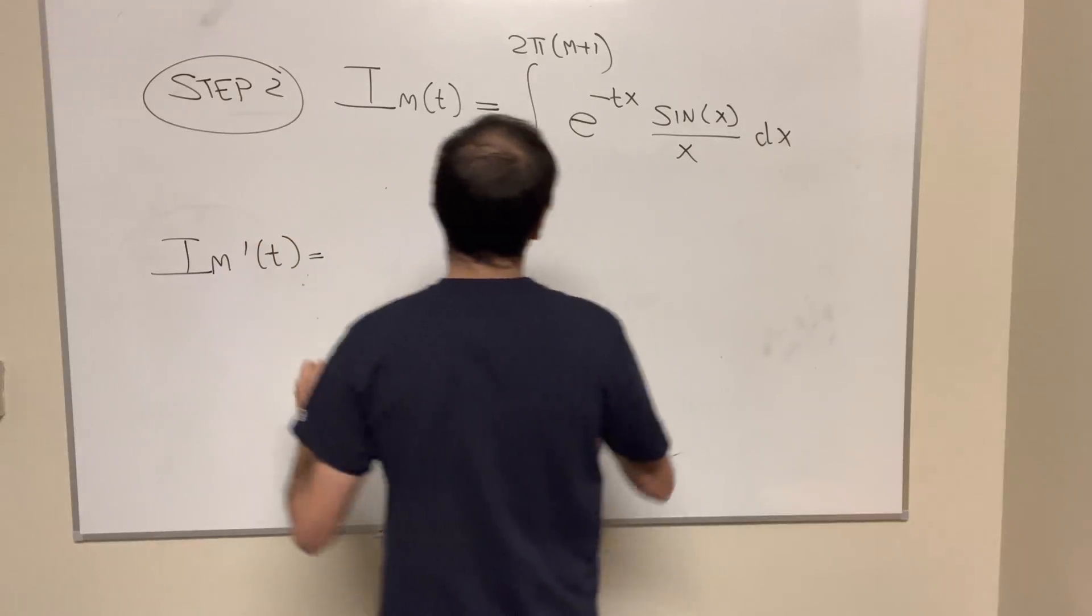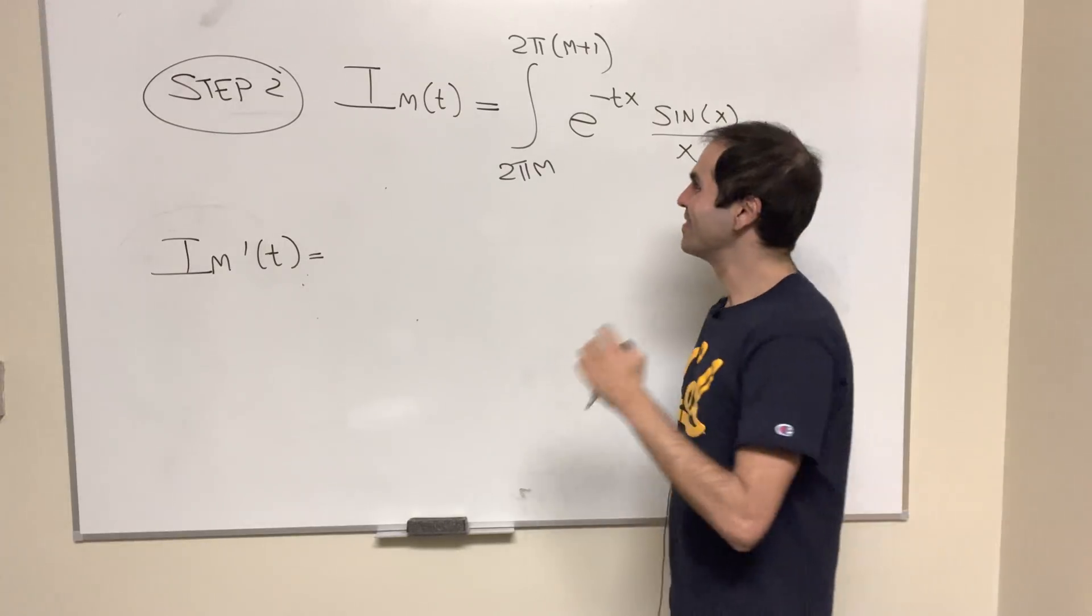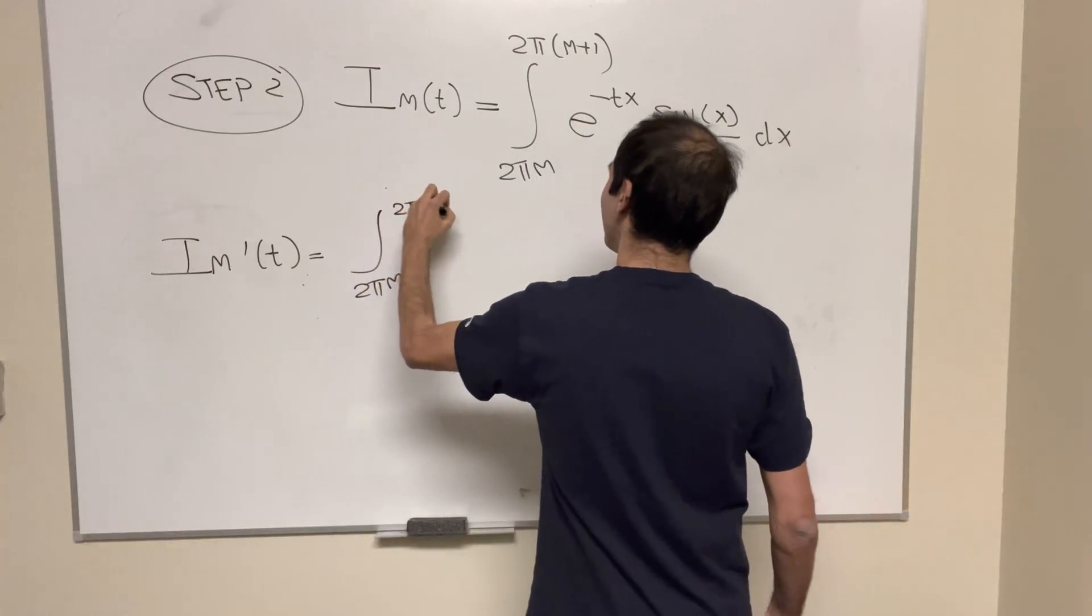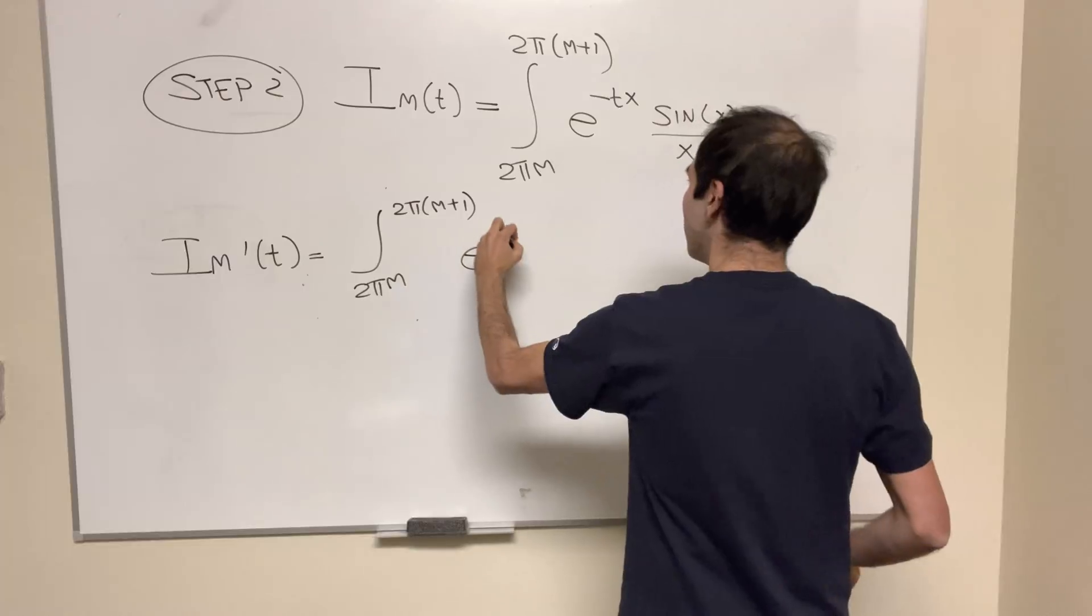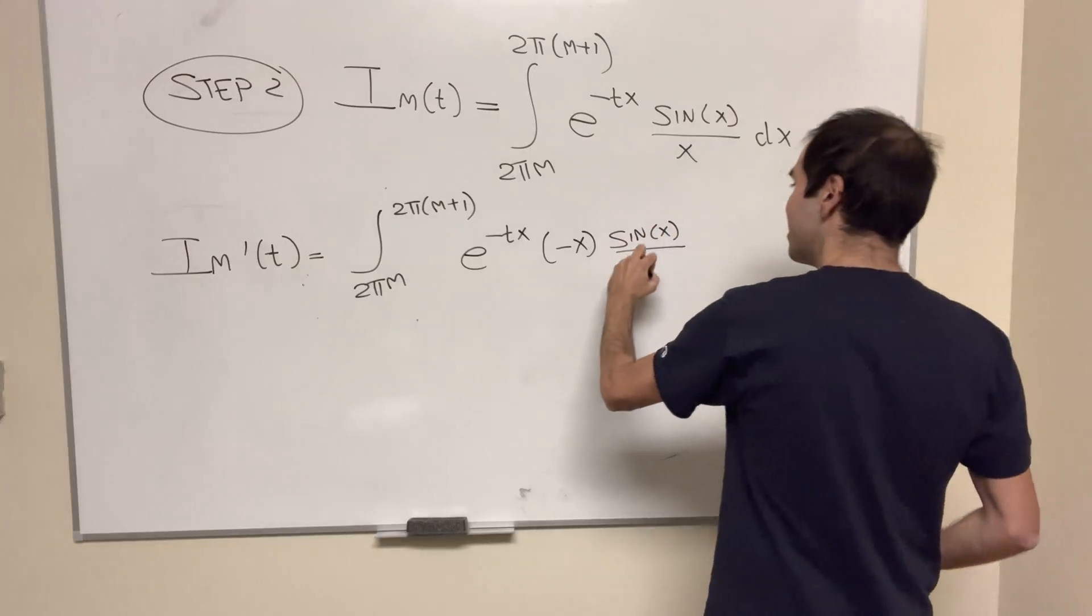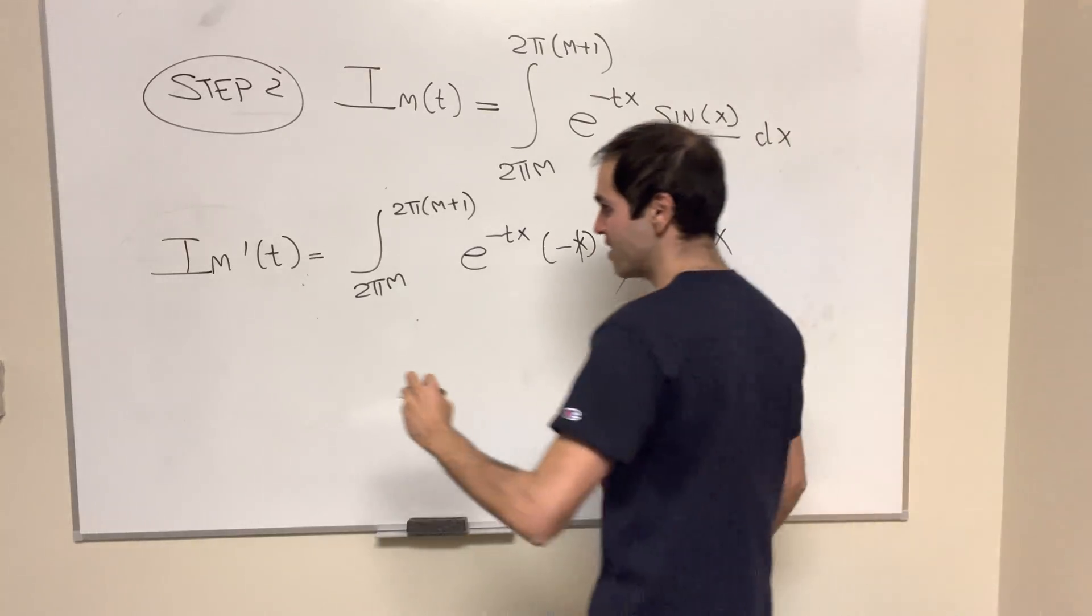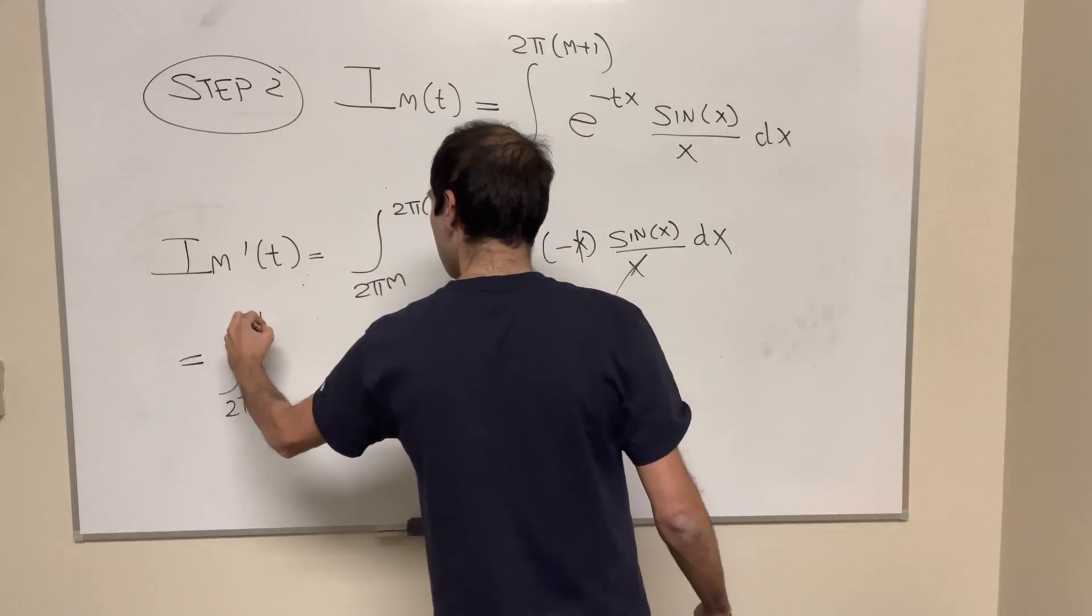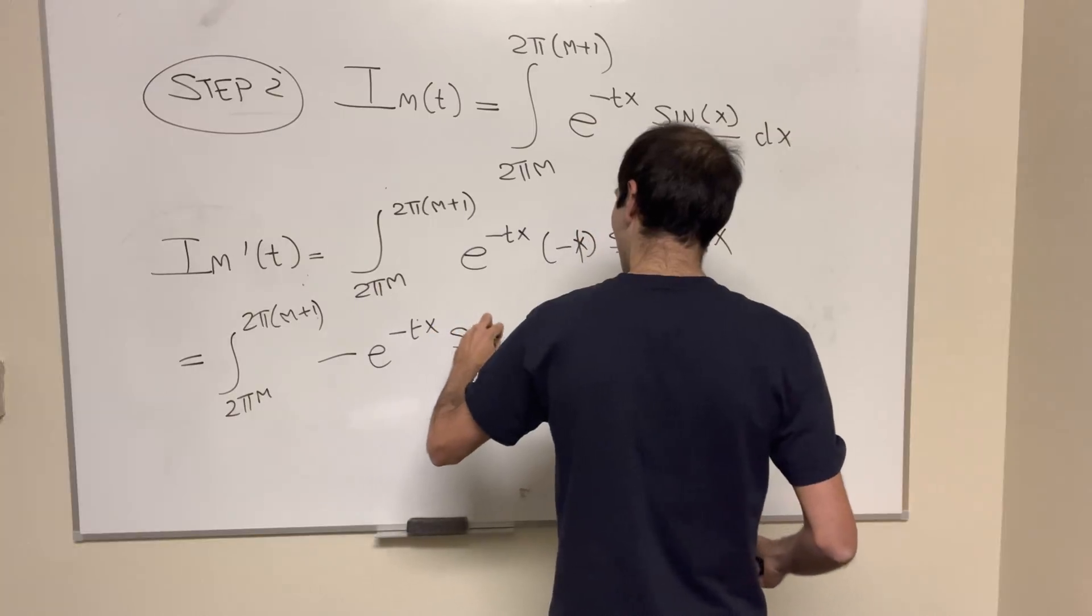So i_m'(t), and again, let's be naughty, put the derivative inside the integral. And we get integral from 2πm to 2π(m+1). Now using the chain rule, the derivative of that is e^(-tx) times -x sin(x)/x dx. Now the x's cancel out here, and then you have a much nicer integral.